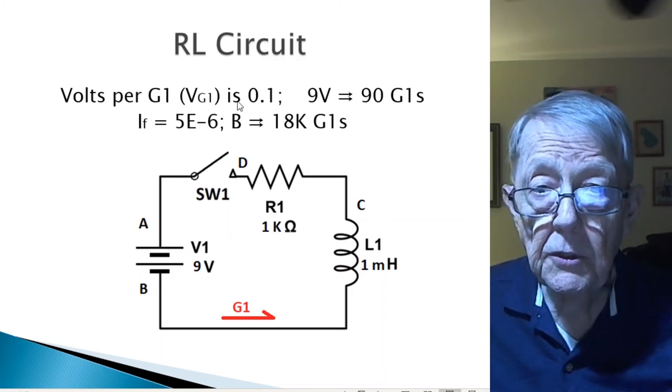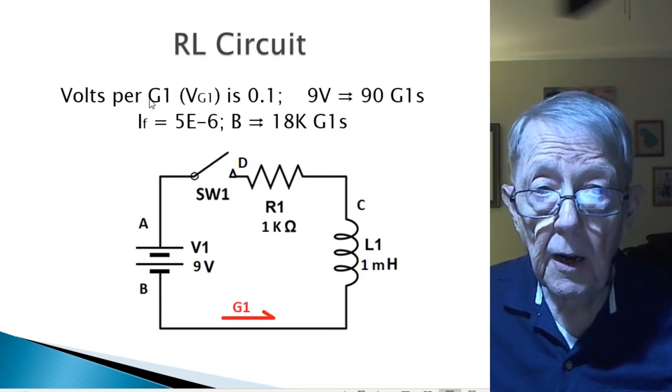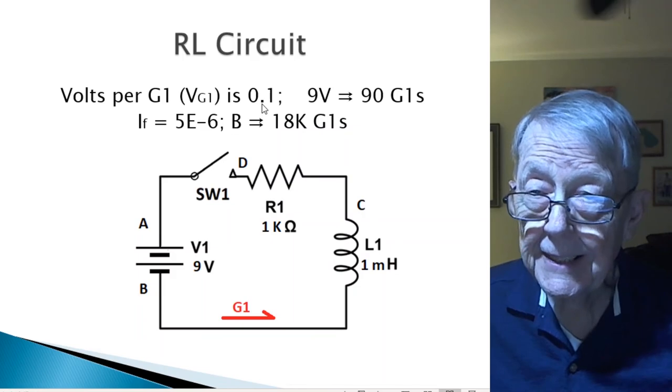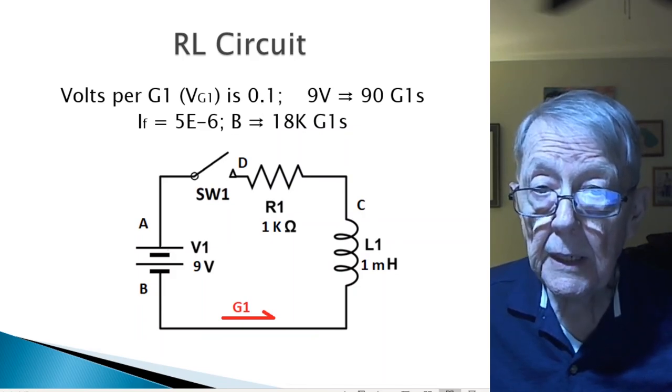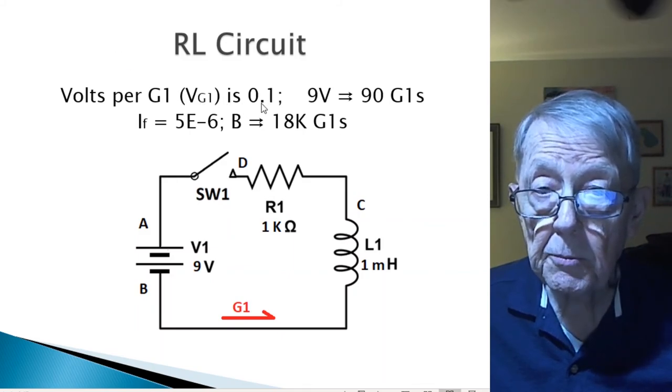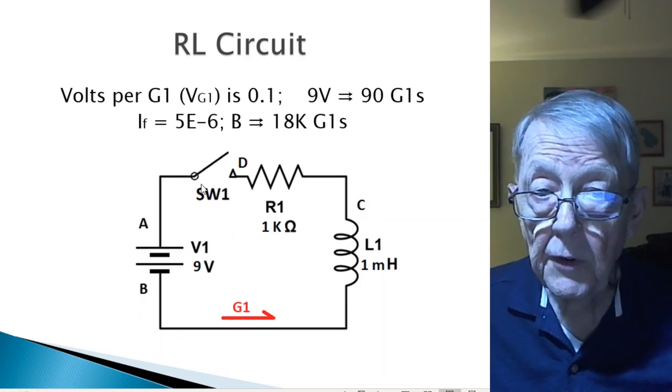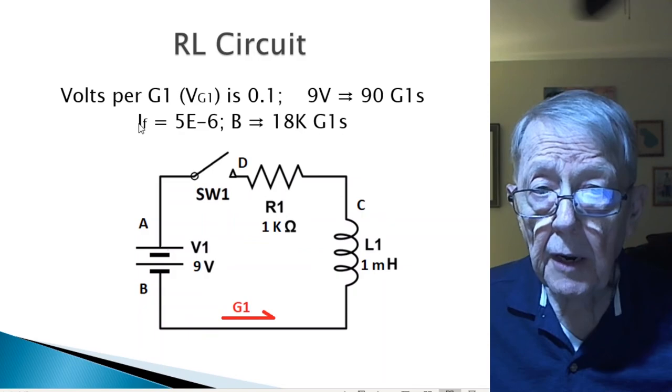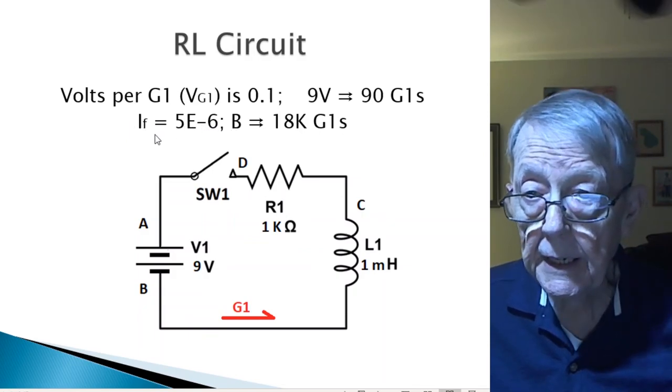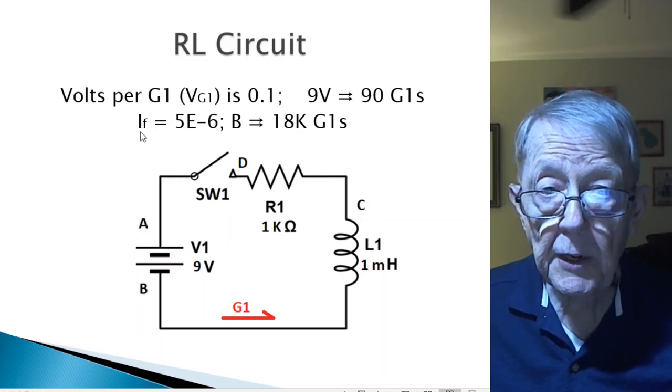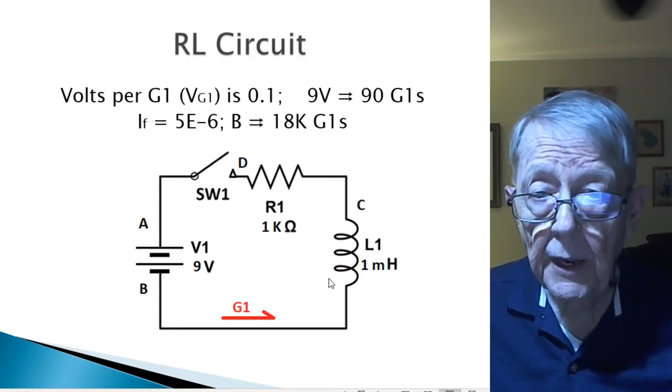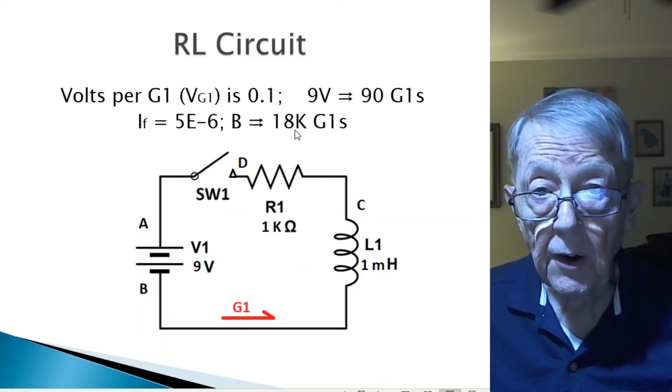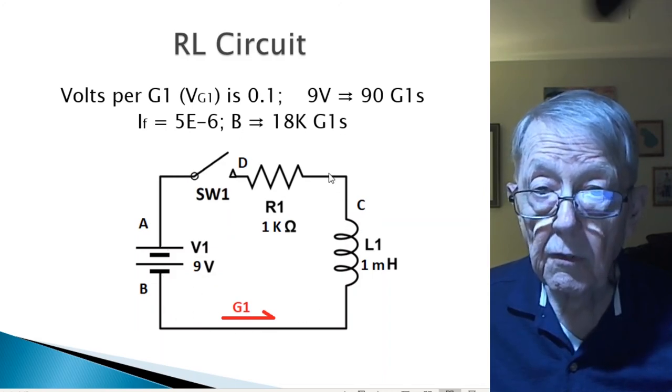These are some of the constants I used in previous examples. I've got 3 volts per G1. Each G1 I've assigned 0.1. That's an arbitrary number. Nothing necessarily real about it, just a number to talk about. So if you have that value of VG1 is 0.1, then a 9-volt battery is going to give you 90 G1s coming out and they're going to flow around the circuit. For the resistor, I've used this value in previous examples. It is arbitrary, 5 times 10 to the minus 6 for the interaction factor, which ultimately shows that when this circuit is stable and running, there are 18,000 G1s generally flowing around the circuit.